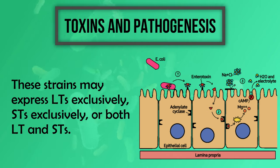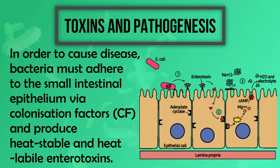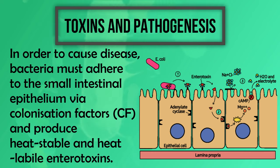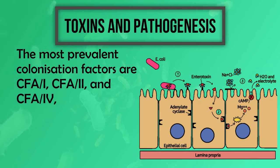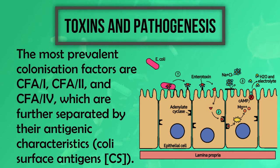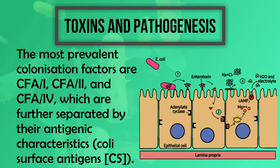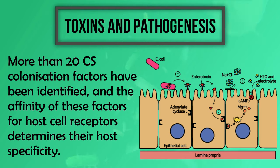To cause disease, bacteria must adhere to the small intestinal epithelium with the help of colonization factors (CF) and produce heat-stable and heat-labile enterotoxins. On the transmission plasmid are the genes for enterotoxins and colonization factors encoded. The most prevalent colonization factors are CFA-1, CFA-2, and CFA-4, which are further separated by their antigenic characteristics — coli surface antigens. More than 20 coli surface antigen colonization factors have been identified, and the affinity of these factors for host cell receptors determines host specificity.